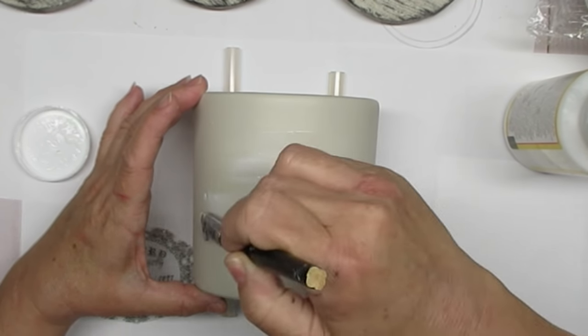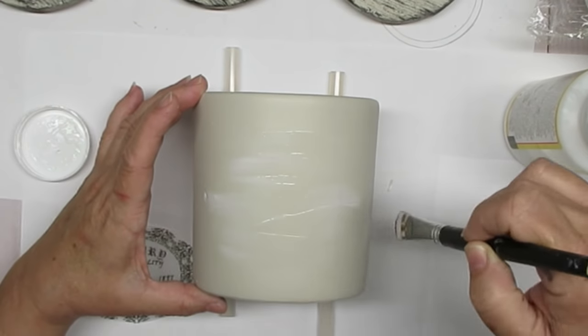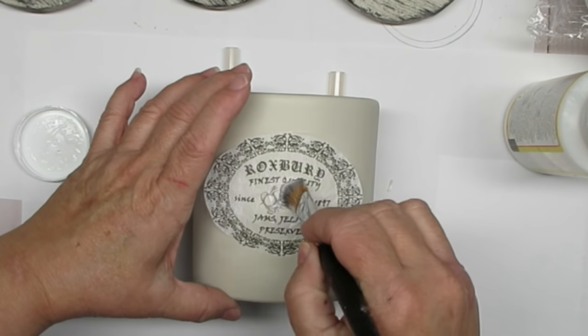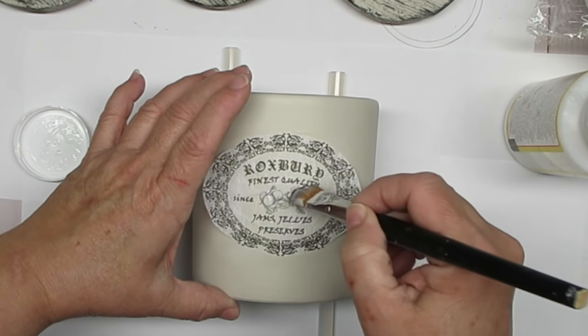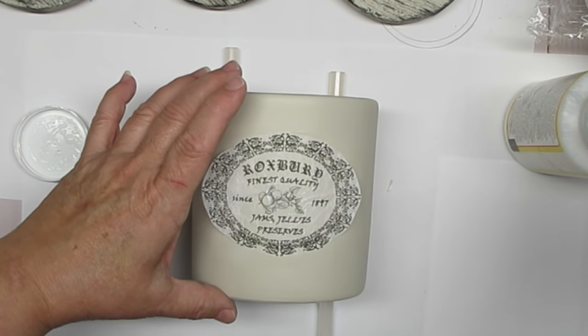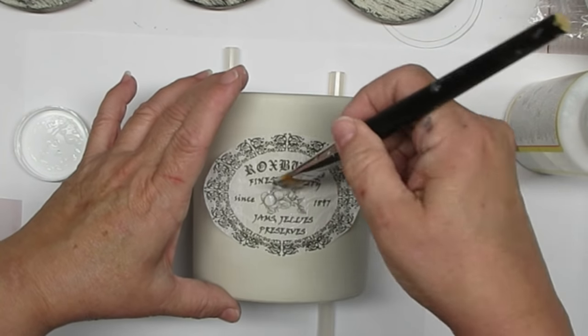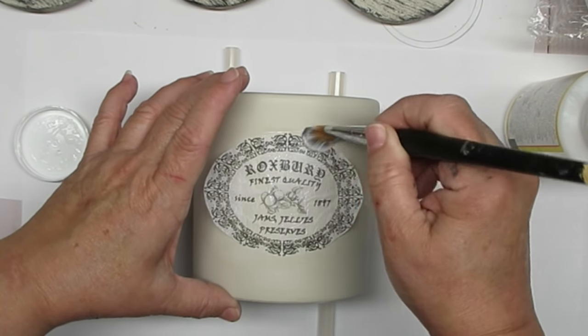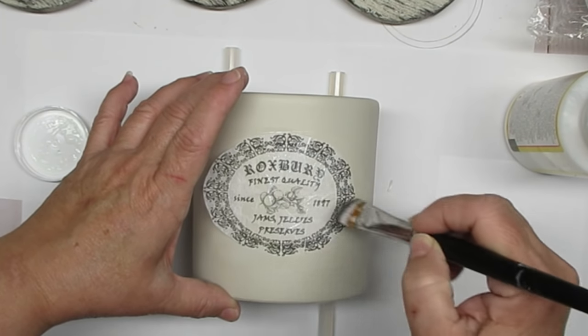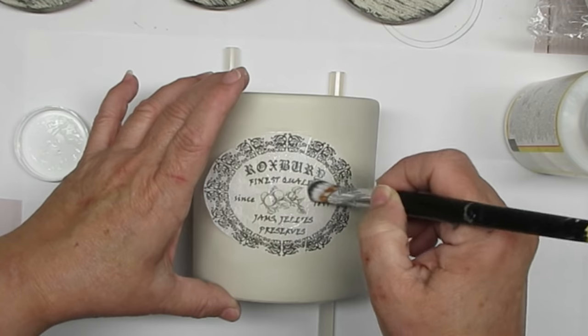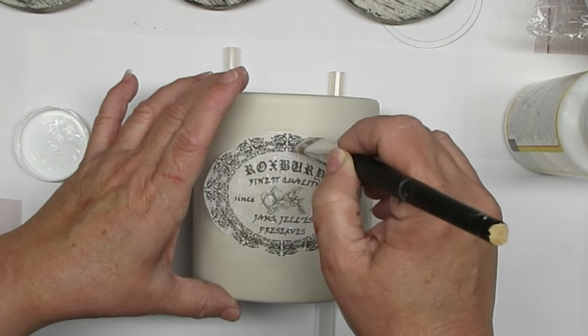One thing I forgot to mention in my tutorial I'll mention it now, is that you need to wait at least an hour for the ink to fully dry before you place it onto your project. If you don't, it might smear with the ink. It also depends on the type of ink you're using in your printer, so you're going to have to experiment with it and see how it goes.